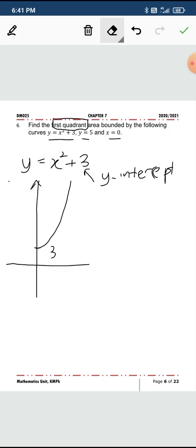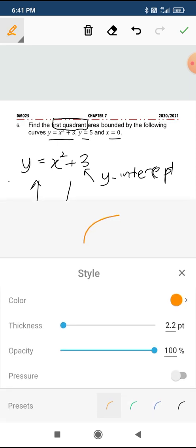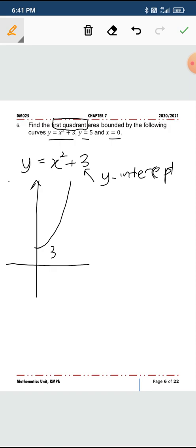And then y equals 5. This is y equals 5. And x equals 0 is this line. So as you can see, clearly this is the area or the region bounded by all the conditions. Remember the condition y equals 5, technically this is x equals 0 (this line), y equals 5 and the curve.